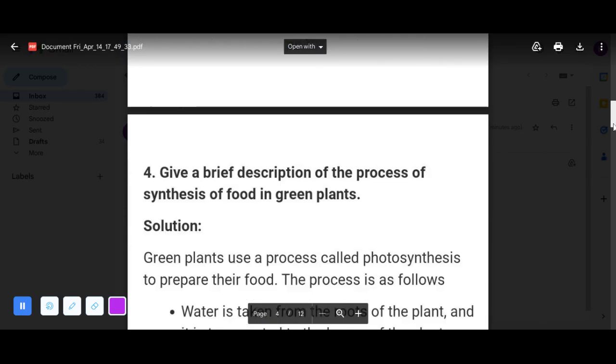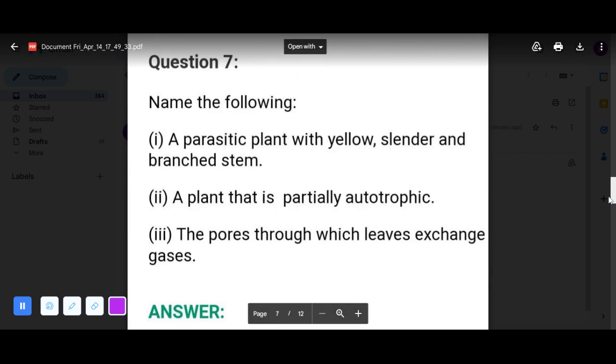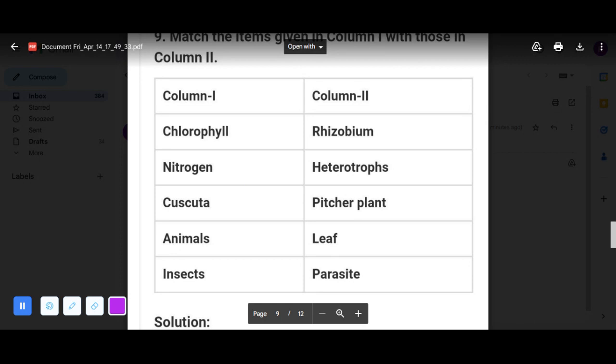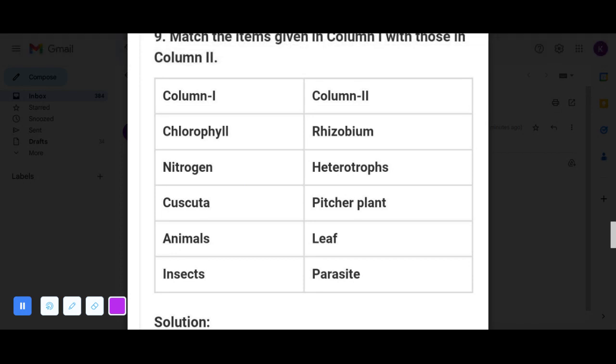Match the items given in column one with those in column two. Chlorophyll is present in green leaf. Nitrogen is in rhizobium bacteria. Cuscuta is a parasite. Animals are heterotrophs. And insect is pitcher plant. Let's check. Yes, we are absolutely correct.